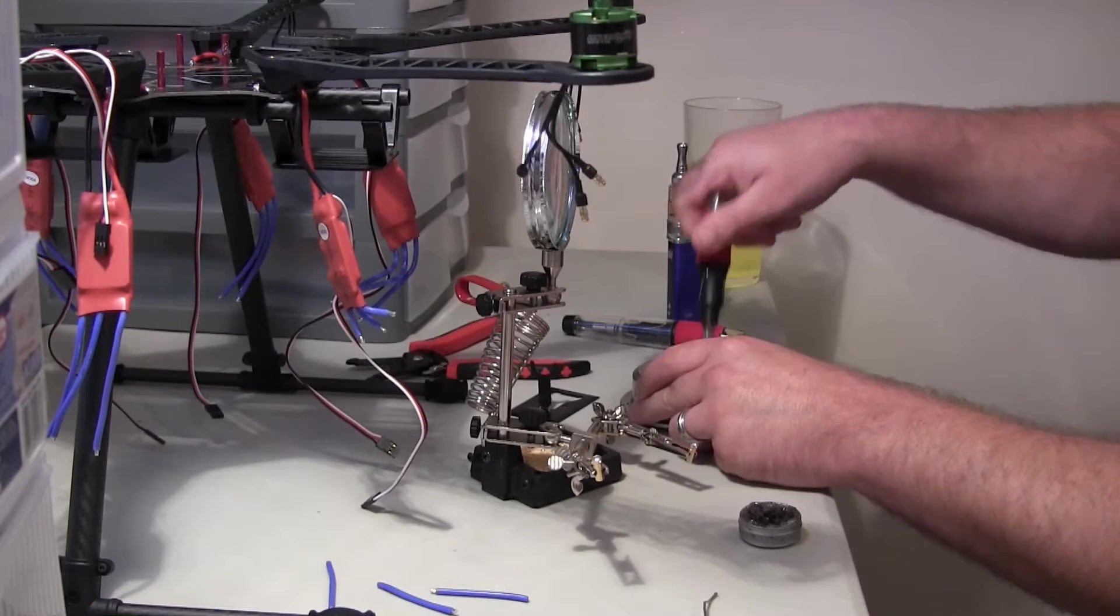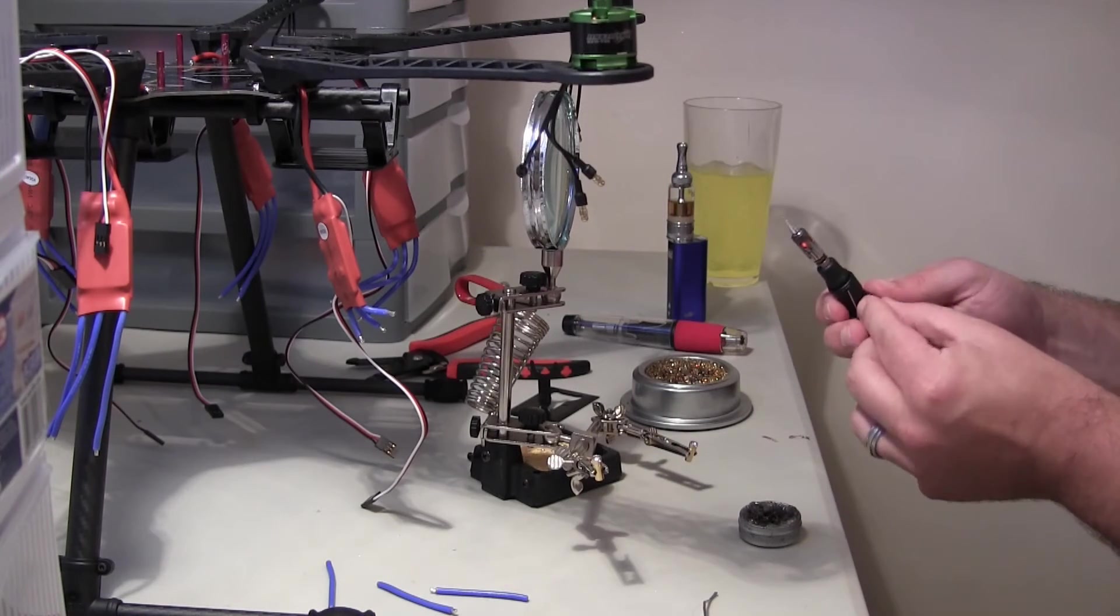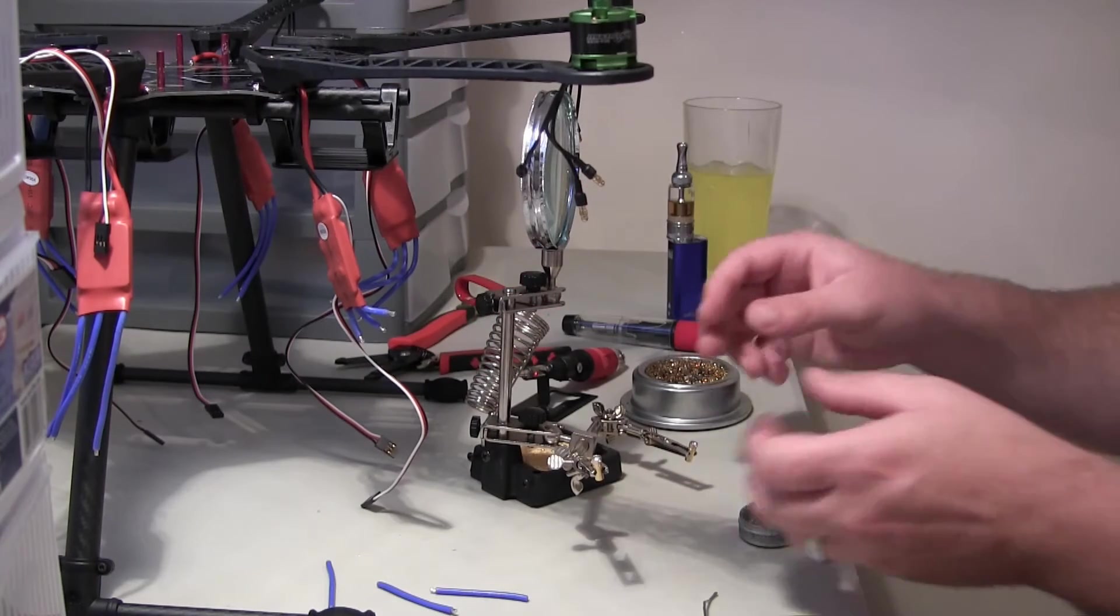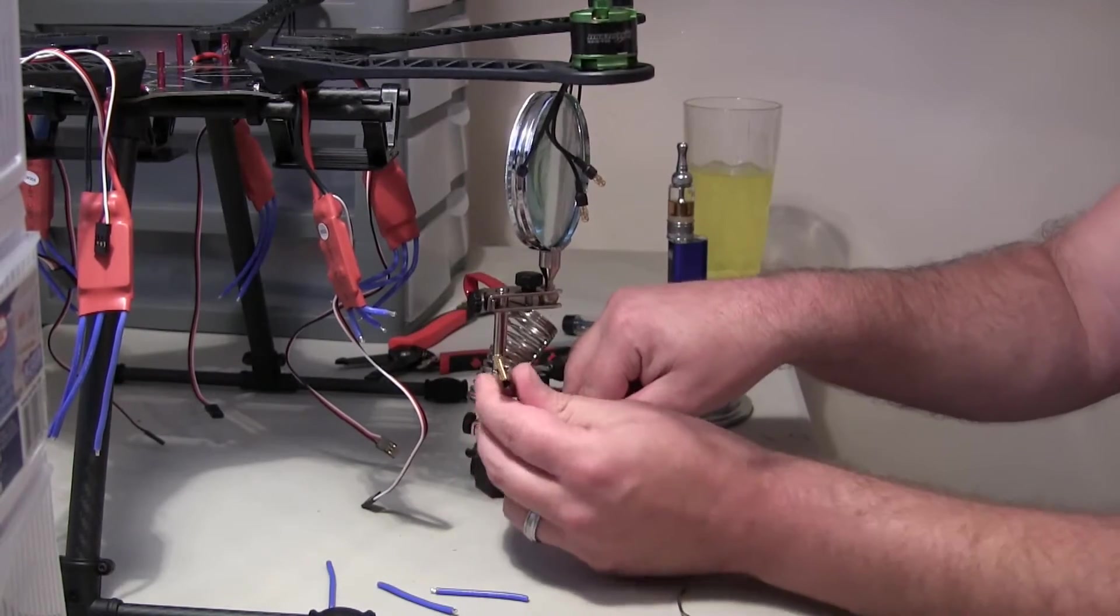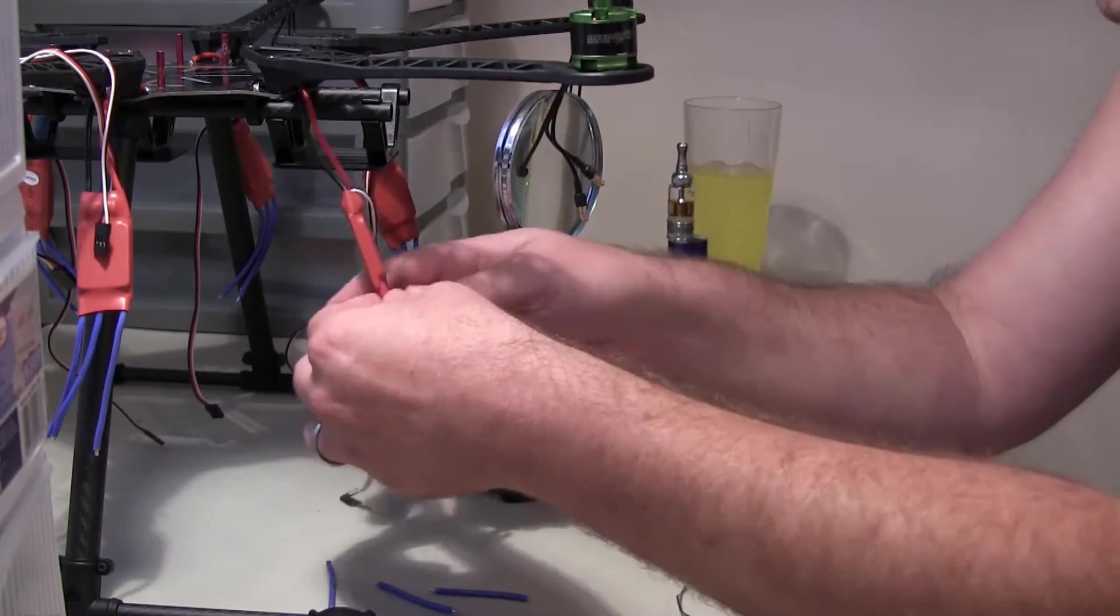My tip is getting a lot dirtier than I normally like to have it. Turn this down for a second. So now we're ready to solder our bullet connectors onto the wires.